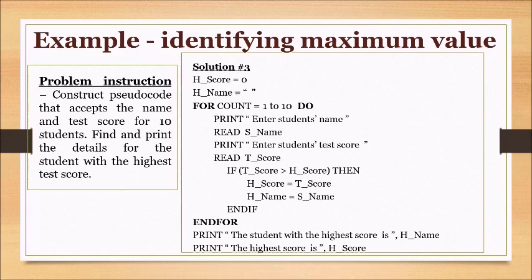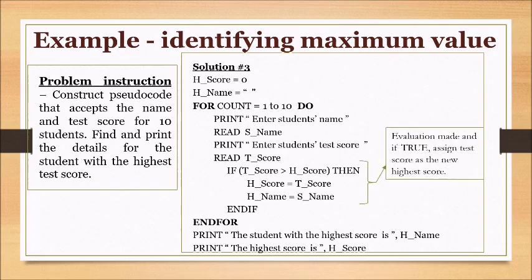The for loop header contains the counter variable and the number of times the loop will be executed. The compound statement within the for loop outlines the prompt and input of a student's name and test score. A selection statement is then used to test whether the test score is greater than the current highest score. If this condition is true, the variables containing the highest test score (h_score) and the student's name (h_name) are updated. Each time the loop executes, the current student's test score is compared with the highest score to identify whether it's larger, and if so, the highest score and name are updated again.